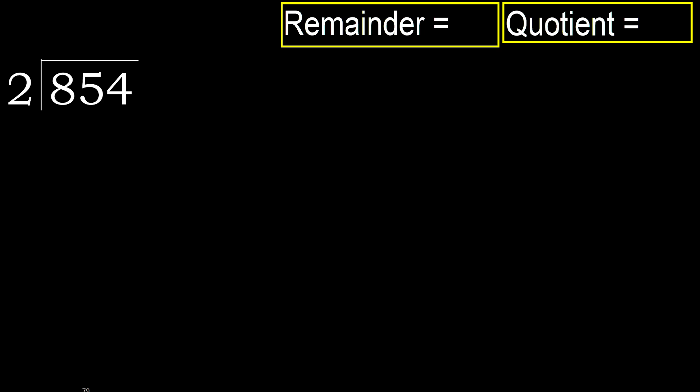850 divided by 2. 8 is not less, therefore start with 8. 2 multiplied by which number is nearest to 8 but not greater? 2 multiplied by 5 is 10.